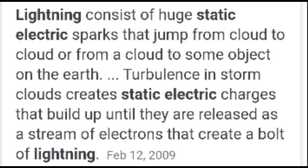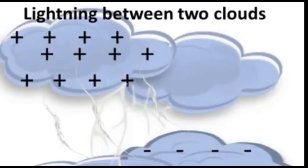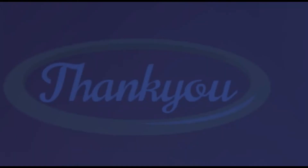In easy words, when clouds rub against each other, electrons move from one cloud to another and heat up the air between the clouds. If too many electrons move very fast, the air between the clouds gets so hot that it glows, and that huge spark is called lightning. I hope you have understood it, thank you.